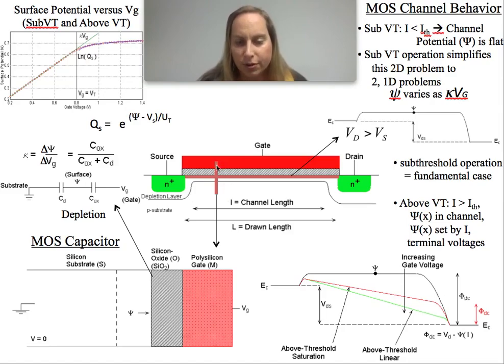When we take this vertical view and then look at it horizontally, what you see is a different perspective. I could have two different cases. One, which is sub-threshold, where the channel potential is relatively flat because nothing is changing. This is basically going to be defined as a current below a threshold current.